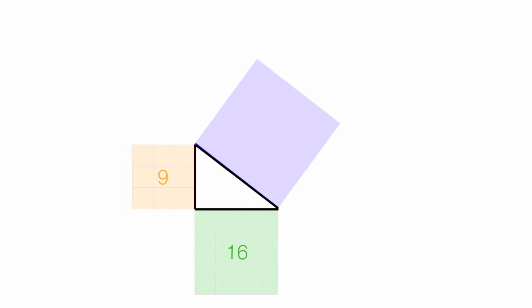The area of the orange square is nine, the area of the green square is 16, and the area of the blue square is 25. Nine plus 16 equals 25.